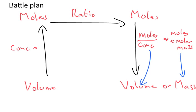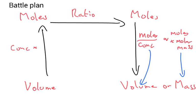What I've drawn here is a battle plan of how we're going to solve some solutions problems. We'll probably be given the volume of a solution and the concentration — but be wary, the volume is probably going to be in centimetres cubed and we'll need to convert. Using concentration and volume, we find the number of moles. We then look at the ratio in the chemical equation. Then either, if asked to find a volume, we do moles divided by concentration; or if asked for a mass, we do moles times the molar mass.